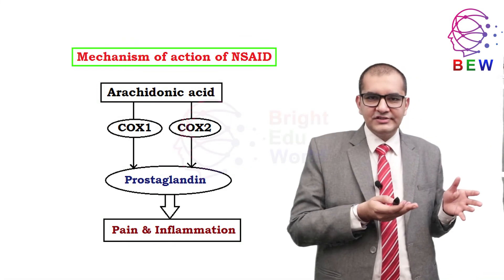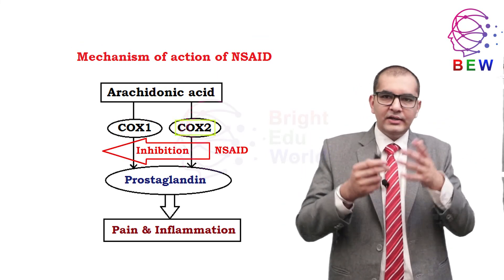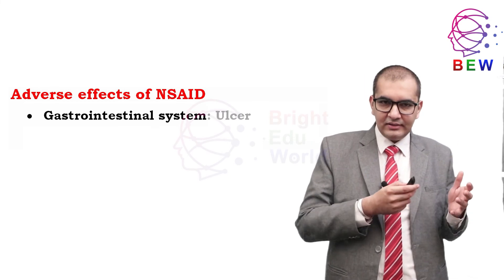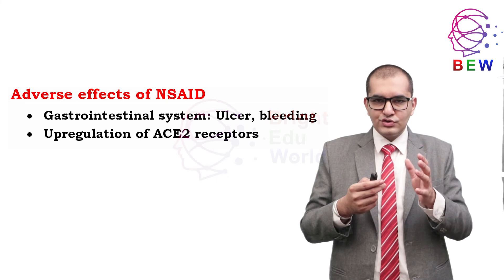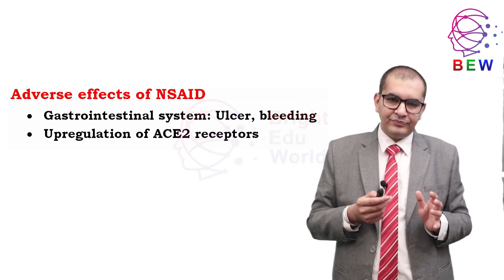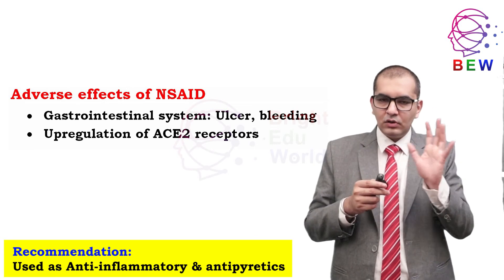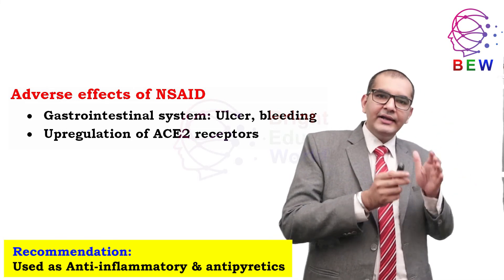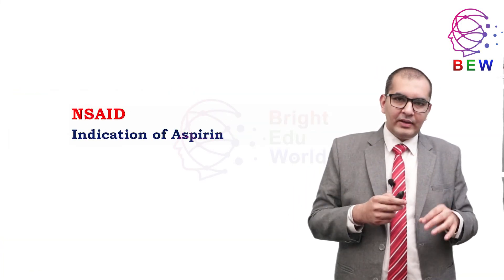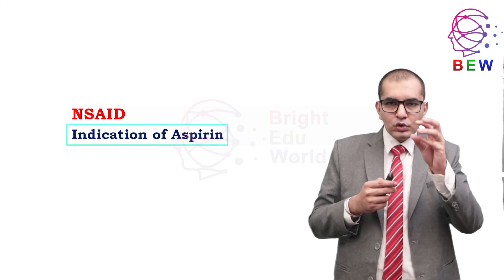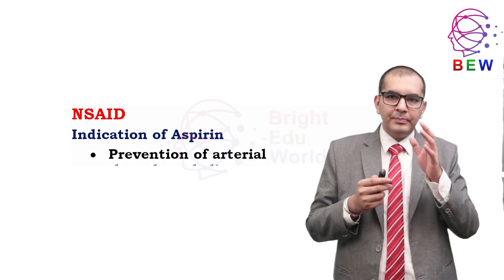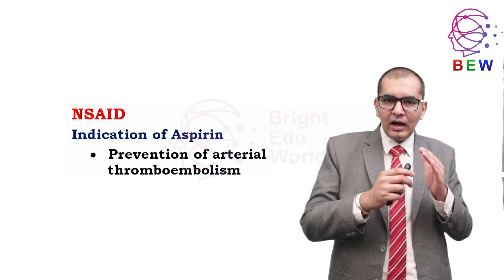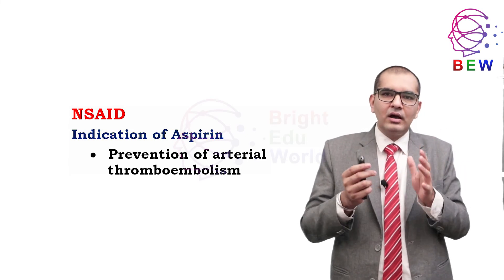NSAIDs block COX-1 and COX-2 and inhibit prostaglandin production. Adverse effects are mostly gastrointestinal: ulcer, bleeding, and sometimes upregulation of ACE2 receptors. There is no evidence of antiviral activity against SARS-CoV-2, but NSAIDs may be used for their anti-inflammatory and antipyretic effects. Additionally, low-dose aspirin is recommended for primary prevention of arterial thromboembolism in patients at high risk of atherosclerotic cardiovascular disease.